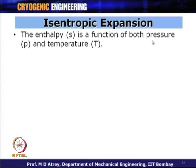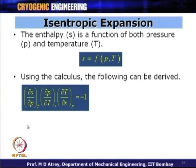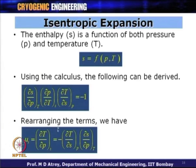Entropy S is a function of both pressure P and temperature T. Using calculus, we write: (del S/del P)_T × (del P/del T)_S × (del T/del S)_P equals minus one. Rearranging, mu_S — which is delta T by delta P at constant entropy — equals minus (del T/del S)_P times (del S/del P)_T.